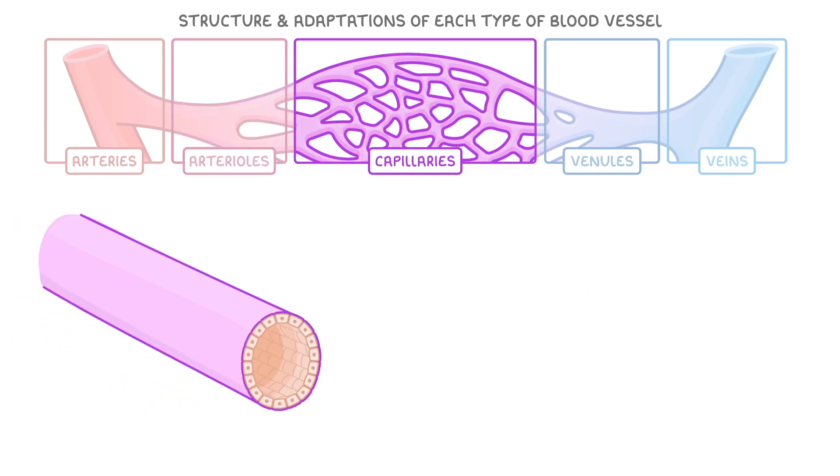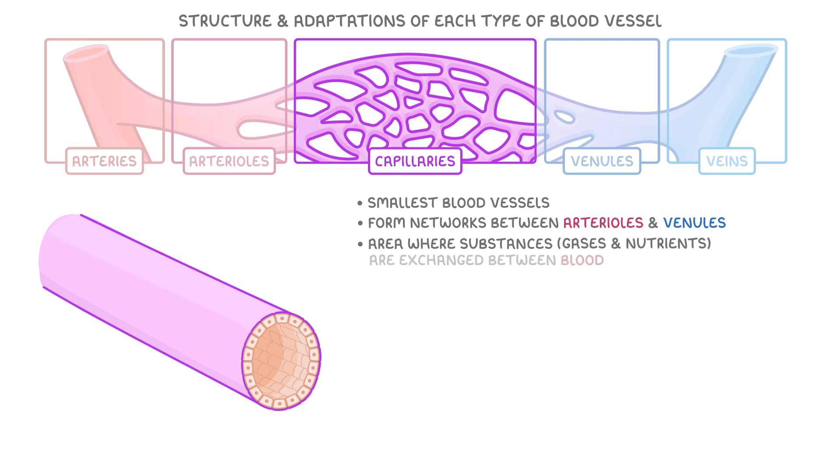Next we've got capillaries. These are the smallest blood vessels and they form extensive networks between the arterioles and the venules. Importantly, capillaries provide an area where substances like gases and nutrients are exchanged between the blood and the body tissues.